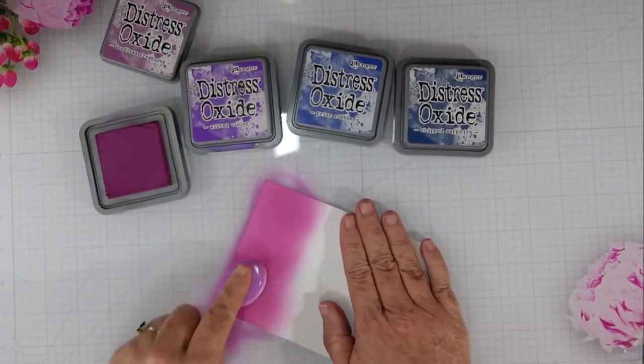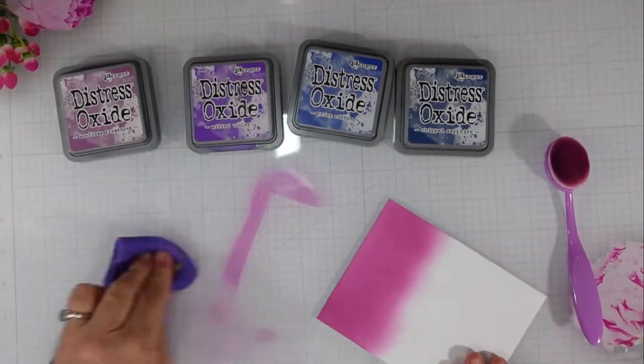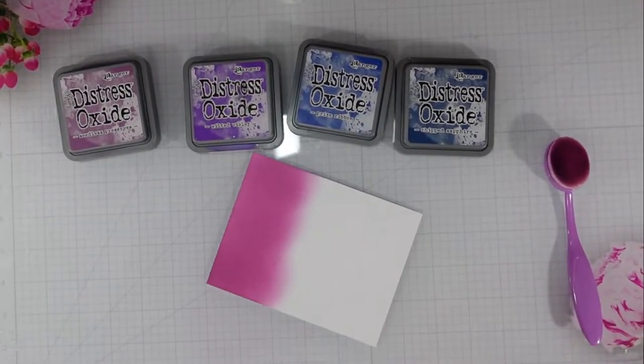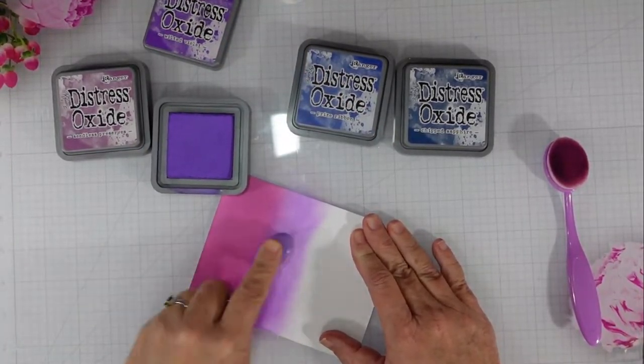But first we need to get a little bit of ink down on our paper. I have a 4.25 by 5.5 inch piece of cardstock and I'm going to do some ink blending with Distress Oxide inks. I have four colors.